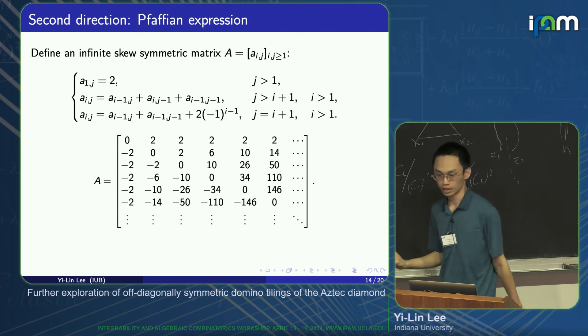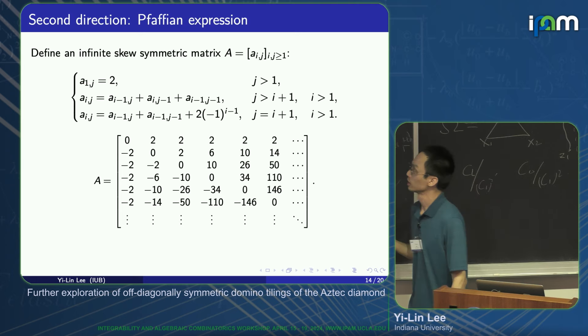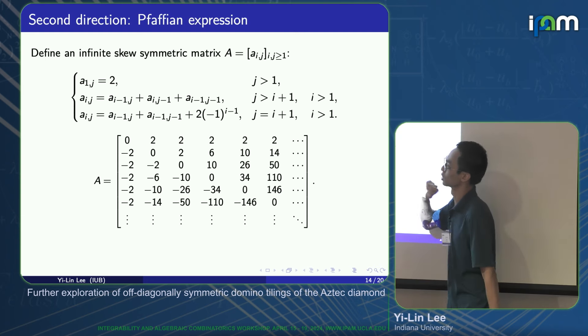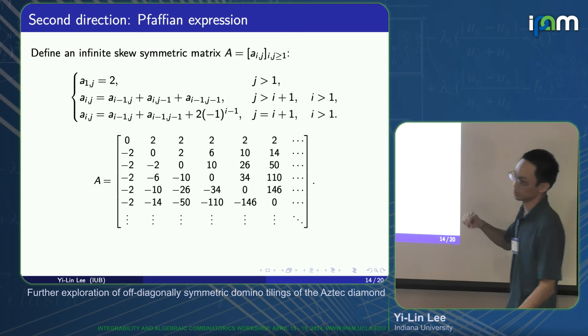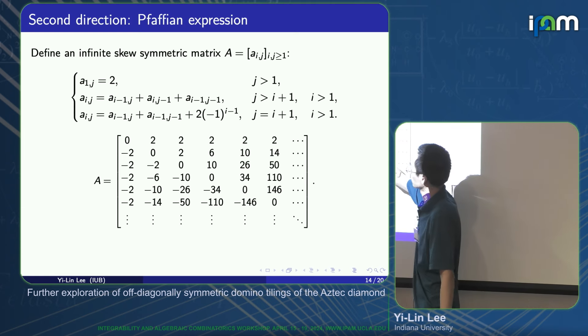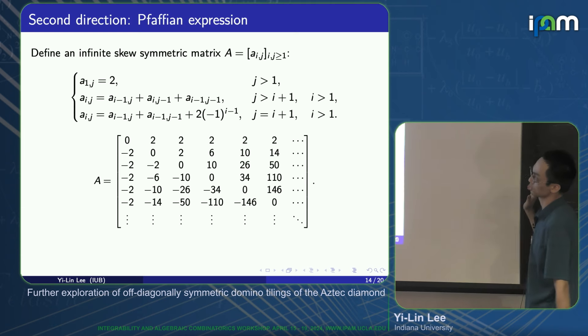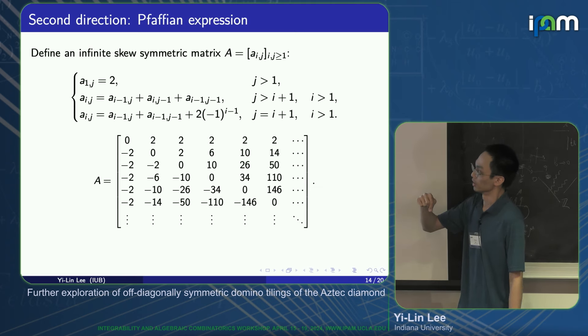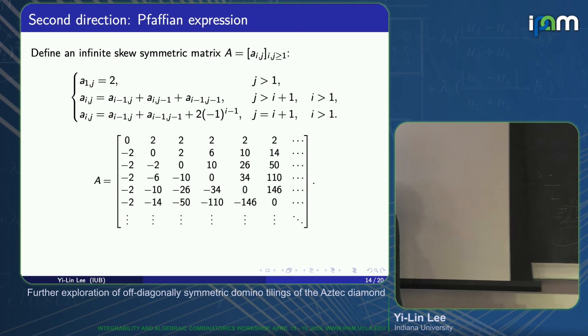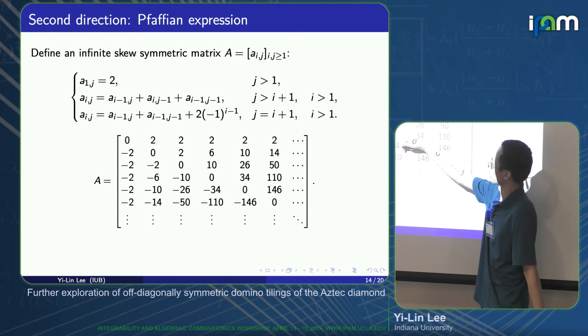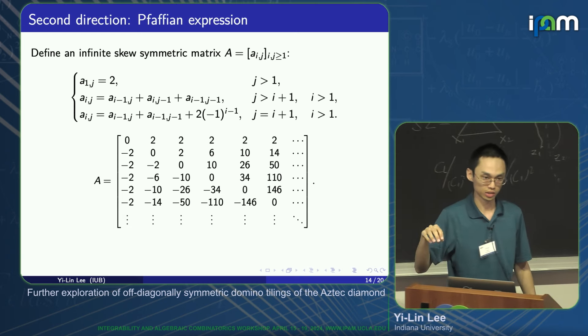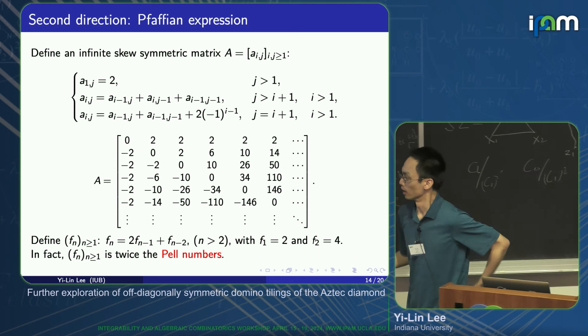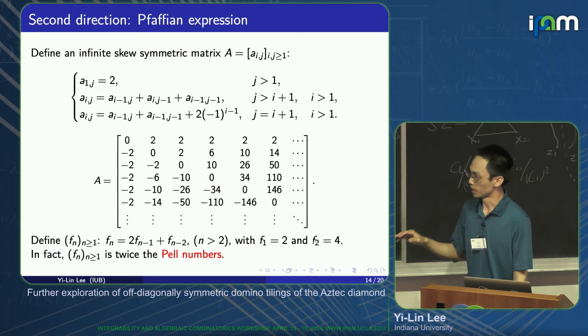Our second result basically gives the Pfaffian formula for nearly off-diagonal symmetry domino tilings. Before stating the formula, I have to define a matrix, skew-symmetric matrix A. Since it's skew-symmetric matrix, let's just focus on the upper triangular parts. The first row is 2, except for the 1-1 entry. The i,j entry is defined recursively as a sum of three terms. Say 26 is 6 plus 10 plus 10, 50 is 10 plus 14 plus 26, and so on. The third identity says that if the entry is just one unit above the diagonal, then it's the sum of two terms plus or minus the constant. Say 10 equals 2 plus 6 plus 2, 34 is 10 plus 26 minus 2. We can define the entry of this matrix recursively in this way.